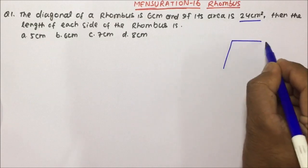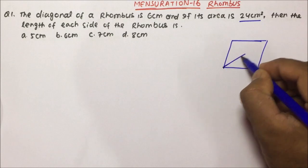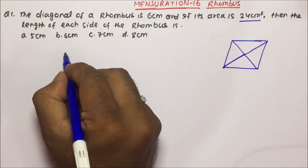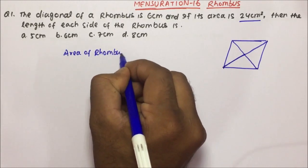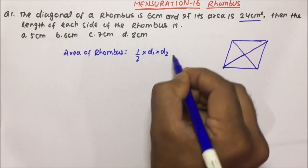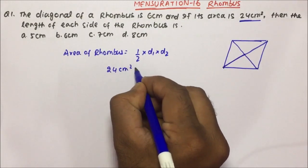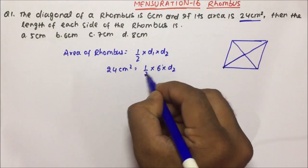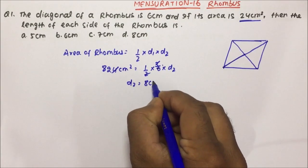If you draw the rhombus, it looks something like this. A rhombus is nothing but a quadrilateral with all four sides equal. Now, the area of a rhombus equals 1/2 × diagonal 1 × diagonal 2. The area of the rhombus is given as 24 cm², so: 24 = 1/2 × 6 × diagonal 2. Solving this, diagonal 2 will become 8 cm.